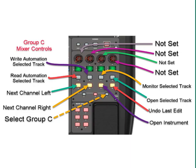Button C5 is to turn on read automation for the selected track. So if you select the track and hit button 5 on Group C, it'll turn on the read automation. Button 6 will turn on write automation, allowing you to write automation. Button 7 lets you monitor the selected track. And button 8 opens up the selected track so that you can do your plugins and things of that nature.